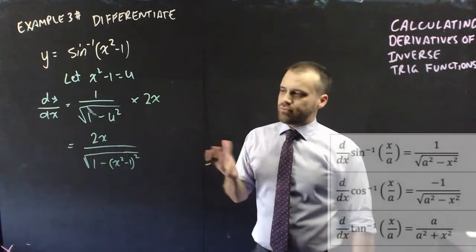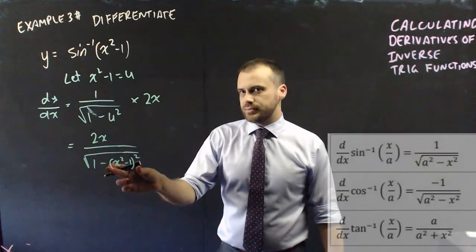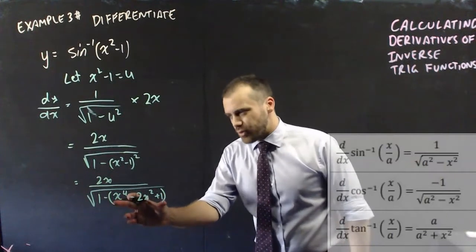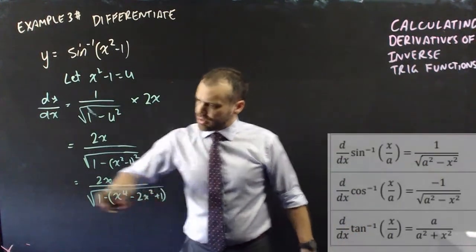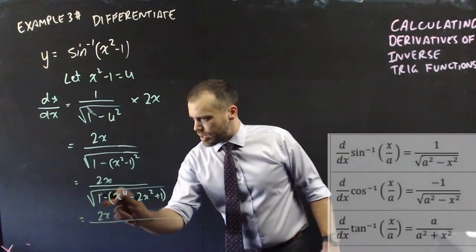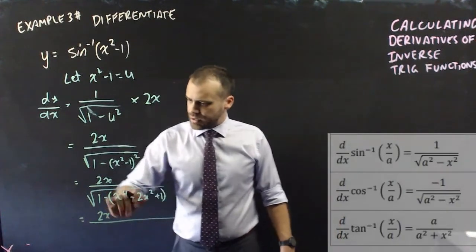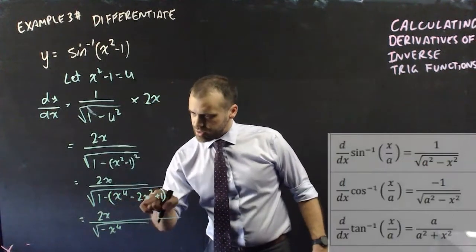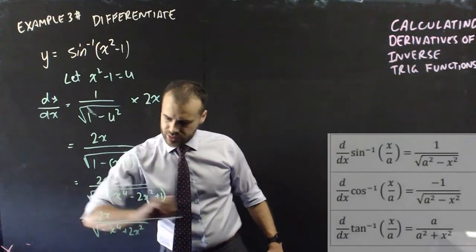And we now have 2x over root 1 minus, and remember our u was x squared minus 1 squared. Depends on how far you want to take this, we can definitely do something here. Now expanding x squared minus 1 squared, you'd get all of that, and all of that is being subtracted from the 1. So already I can see something interesting, because it's 1 minus positive 1, so those cancel out, and what I'm going to be left with is negative x to the 4, and then minus minus 2x squared, which is positive 2x squared.